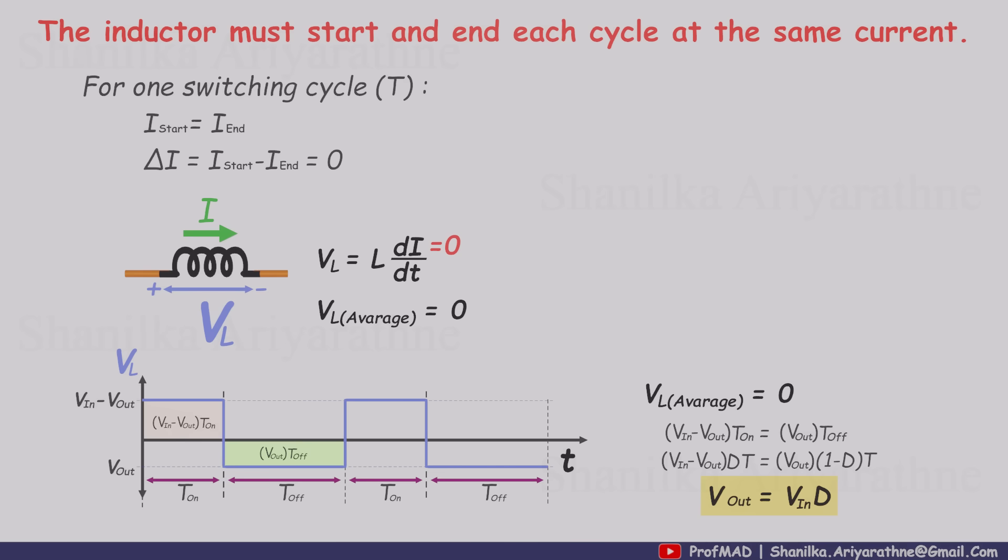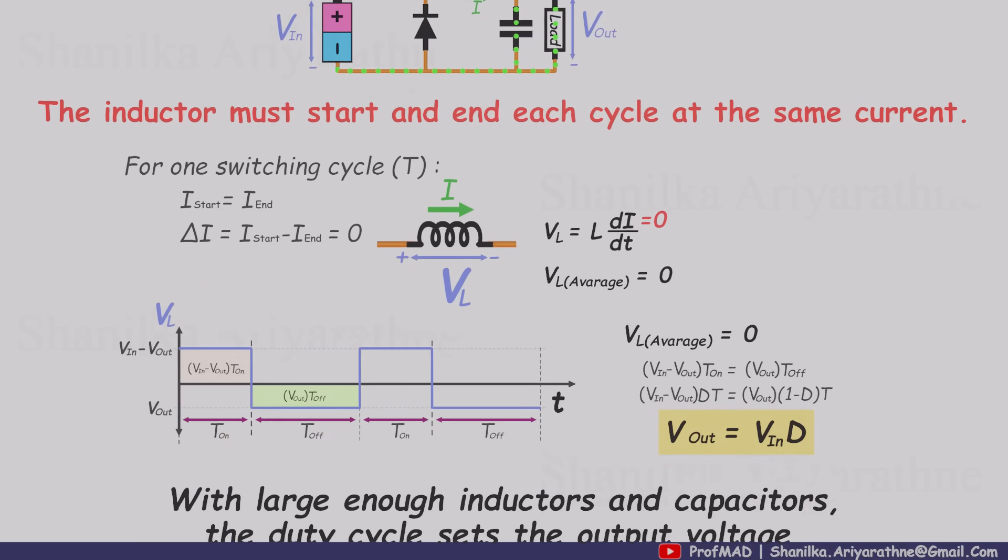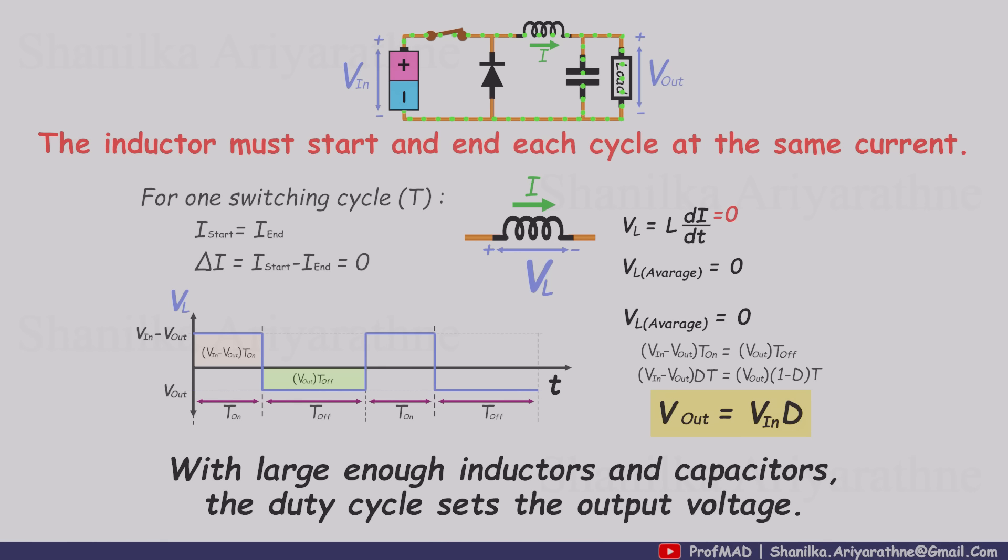And remember, the duty cycle D is always between zero and one, so as long as the inductor and capacitor are large enough that the output voltage barely changes within a switching cycle, the duty cycle directly sets the step down ratio in the ideal case.